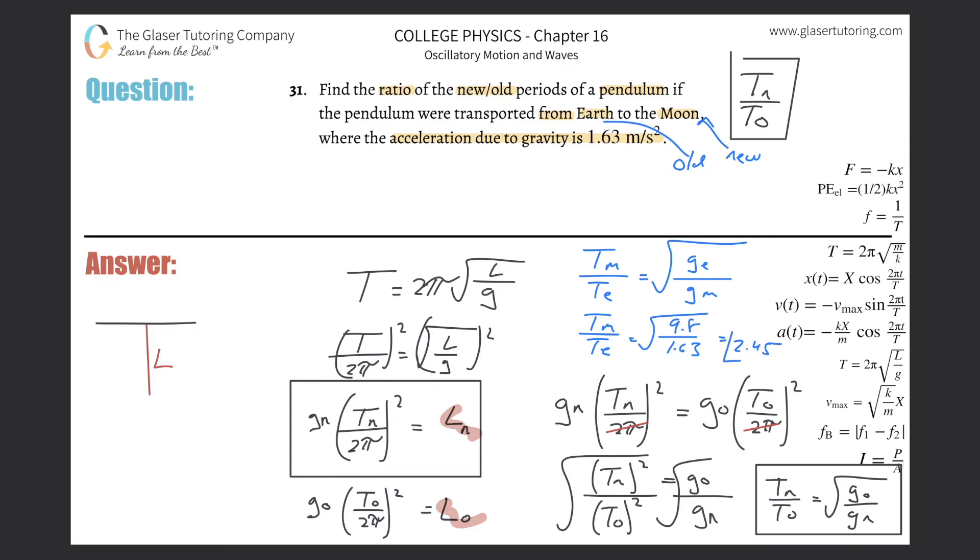So in other words, the period of oscillation on the Moon is going to be 2.45 times larger than the period on Earth. And that's because the g value has gone down. So it's going to take longer for it to oscillate on the Moon. It's because gravity is weaker. Simple.